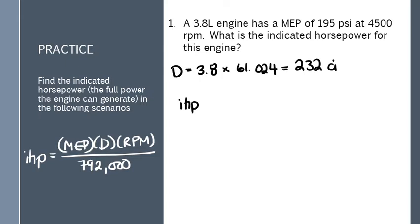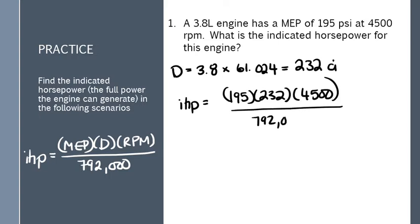So here we go. IHP. You're going to get some massive numbers. That's fine. IHP, mean effective pressure, displacement, engine speed, divided by 792,000. Do all that math. Ideally this engine would provide 257 horsepower at 4500 rpm.